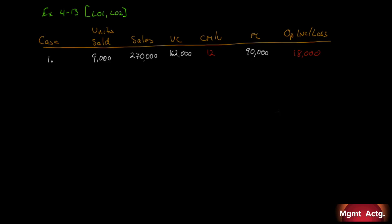Case 2: we don't know how many units were sold, but sales are $350,000. We don't know variable expenses, but contribution margin per unit is $15. Fixed costs are $170,000 and operating income is $40,000.